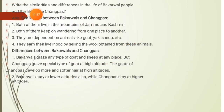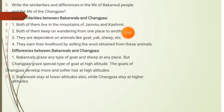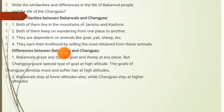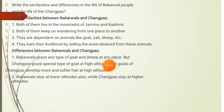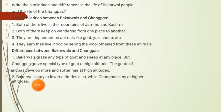Now we will write the similarities and differences between the life of Bakarwal people and Changpas. Similarities: both live in the mountains of Jammu and Kashmir; both keep on wandering from one place to another; both are dependent on animals like goat, yak, and sheep; both earn their livelihood by selling wool from these animals. Differences: Bakarwal graze any type of goat and sheep at any place, but Changpas graze special goats at high altitude where the goats develop more and softer hair. Bakarwal stay at lower altitudes too, while Changpas stay at high altitude only.